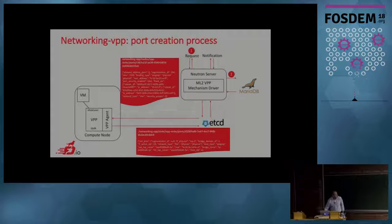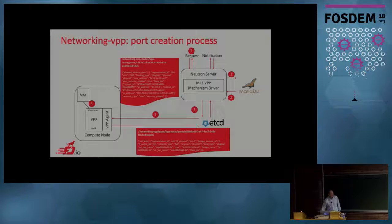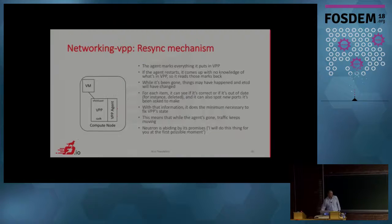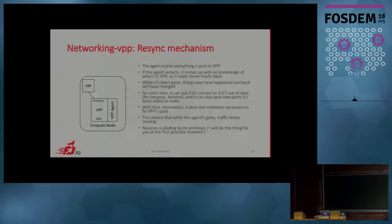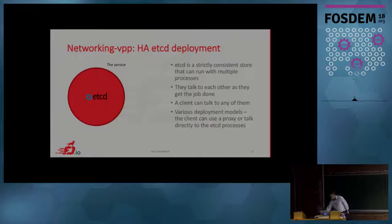Typically creating a port goes through several steps: Neutron asks to create a port, it's stored in etcd, the agent understands it and sends feedback to notify Neutron so the VM can be created. If for some reason the agent crashes, when it restarts it performs what we call state reconciliation — every object within VPP has a unique ID. On restart, the agent fetches state from etcd and from VPP, diffs those states, removes what's no longer needed, and adds new required states.